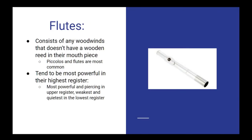Starting with the flutes. As I mentioned before, this subsection contains any woodwind that doesn't use a wooden reed to produce its sound. The most frequently used flutes in the orchestra are the piccolo and the flute. As a subsection, the flutes tend to become more and more powerful the higher up in their register you move. Likewise, the lower in their register that you move, the less and less powerful they become. In general, flutes tend to be very soft and quiet in their lowest registers, and very shrill and piercing in their highest registers.